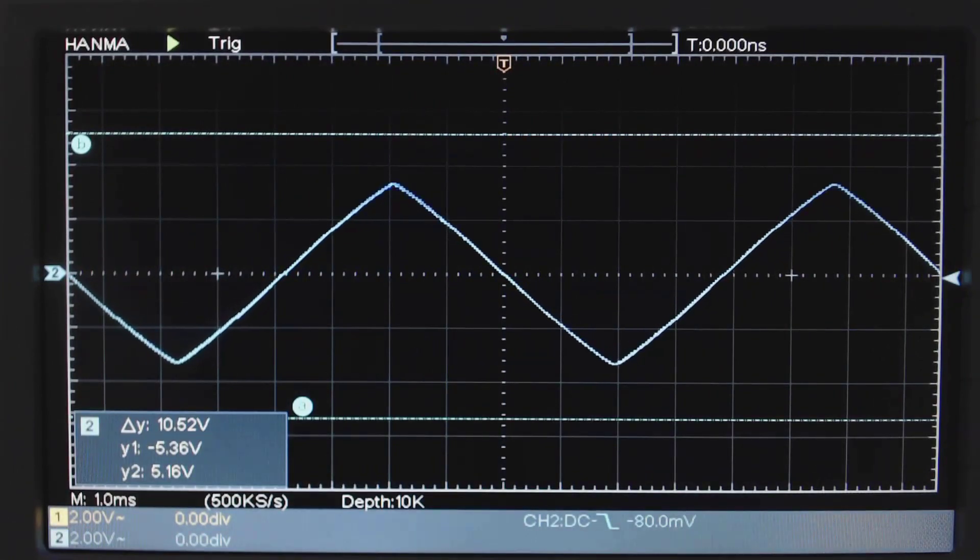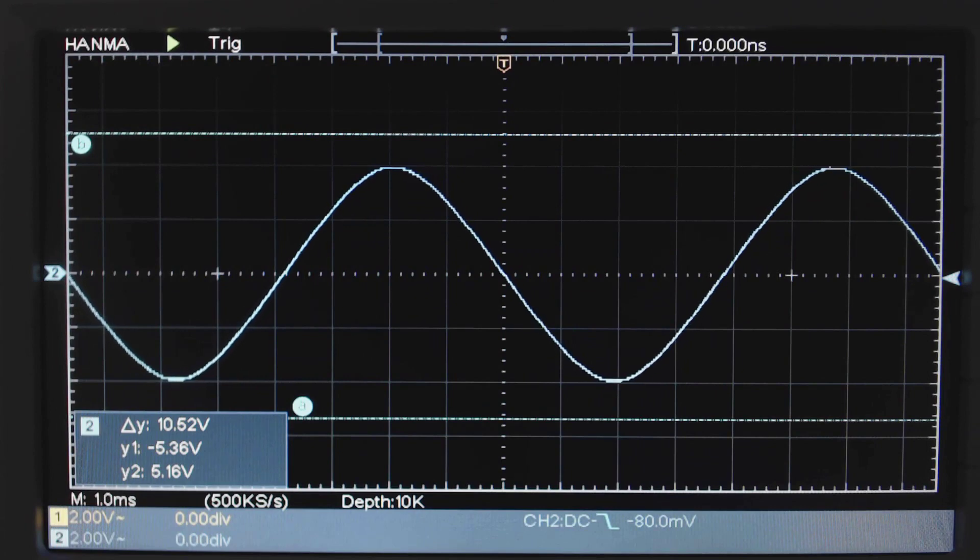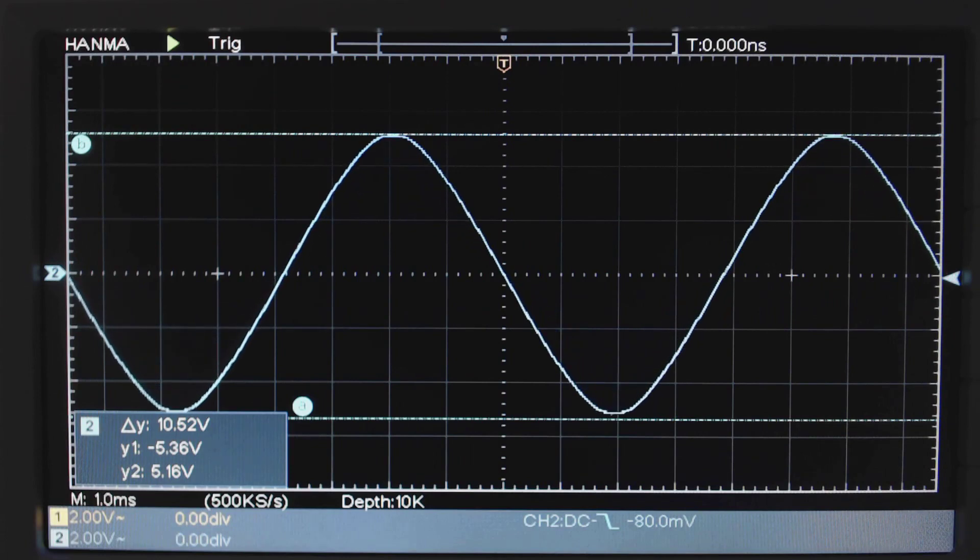Adjust trimmer number one. I'm turning this clockwise, clockwise, clockwise, anticlockwise. Anti-counterclockwise, and there we go. Now I'm going to adjust the amplitude. That's looking good.